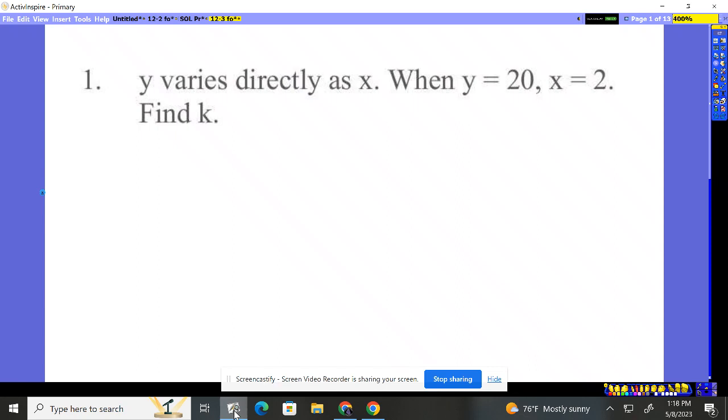All right, problem one. It says y varies directly as x. So that means it's y equals this constant variable times x. Now y and x are going to change, but that constant won't. It says find me k. So I know it says directly, so I know it's y equals k times the x.